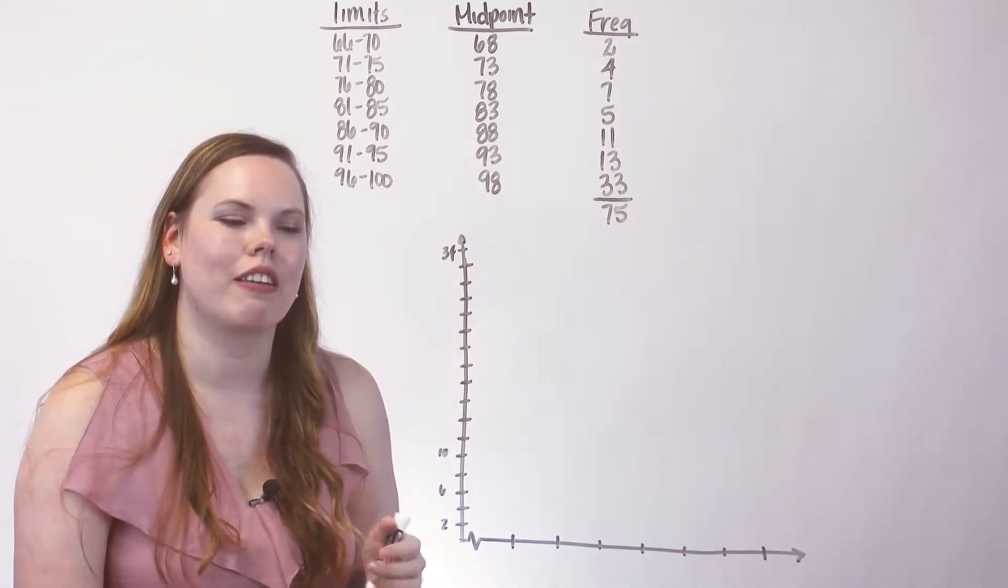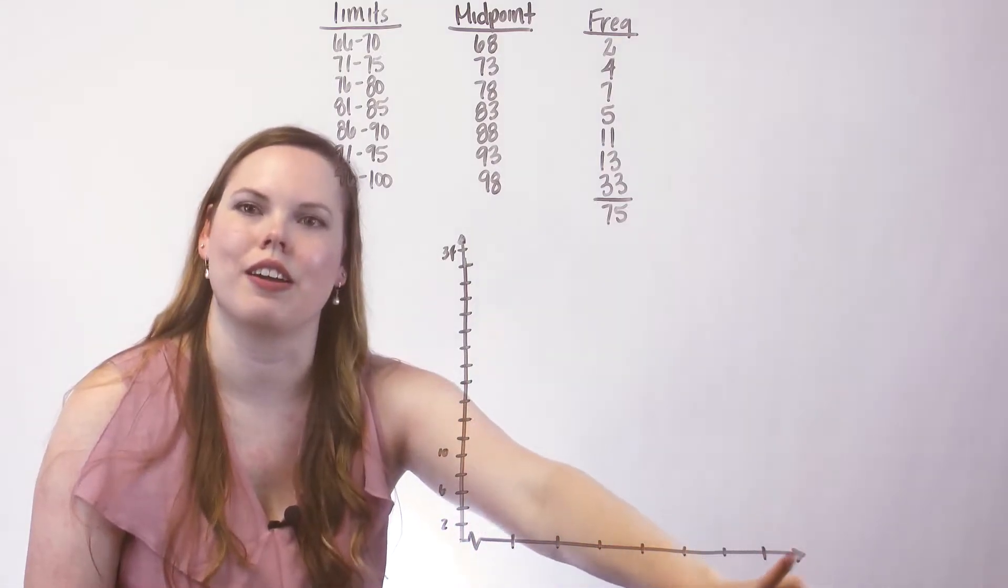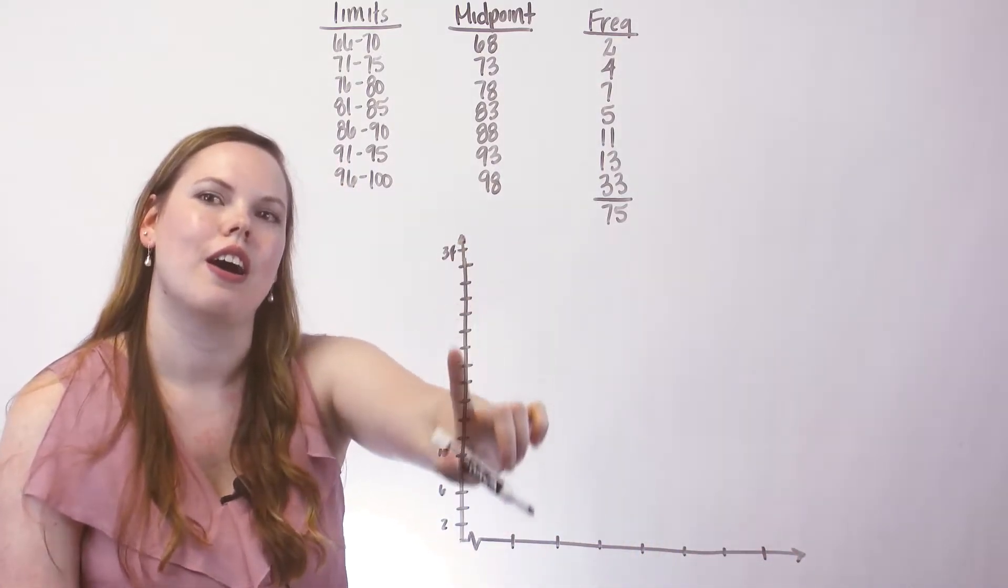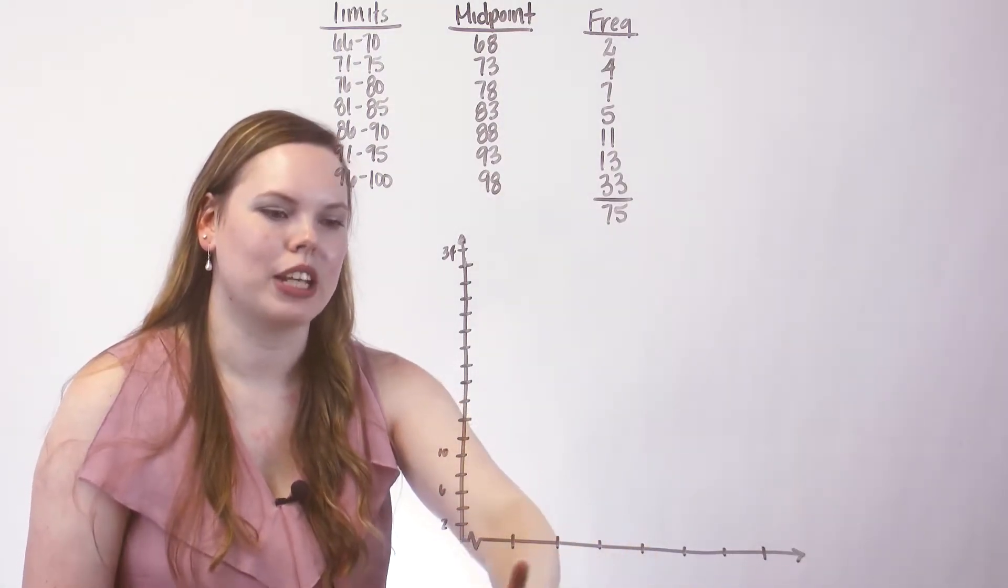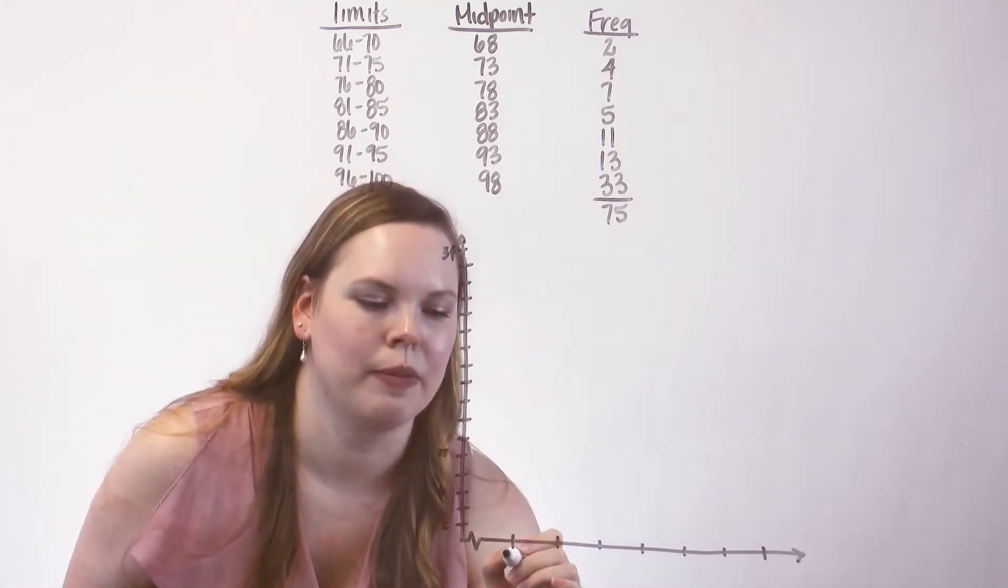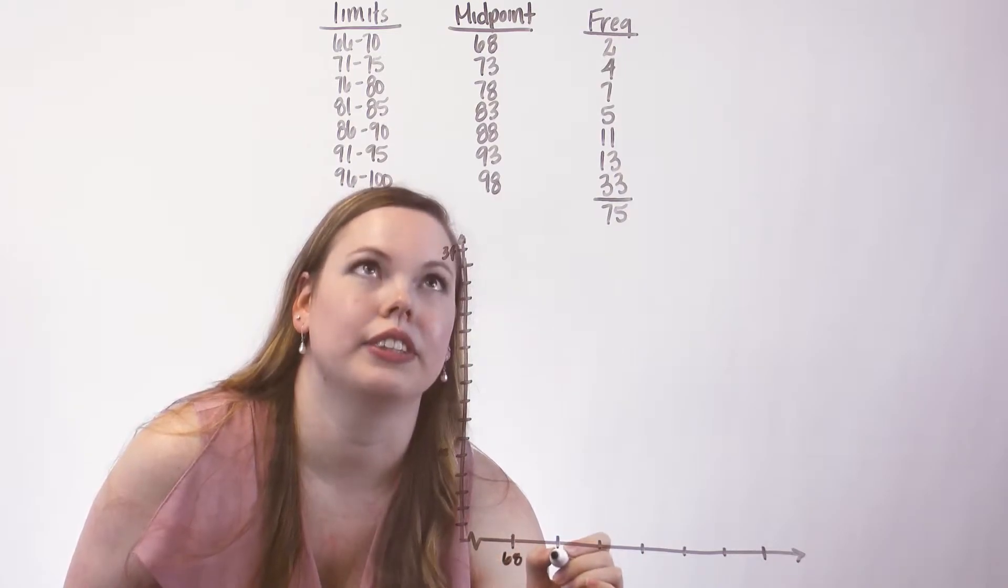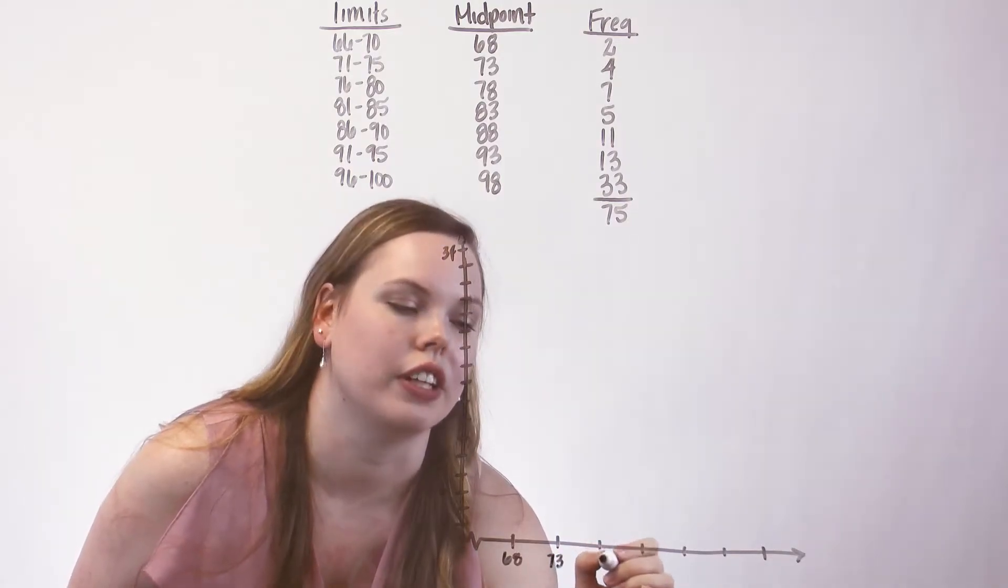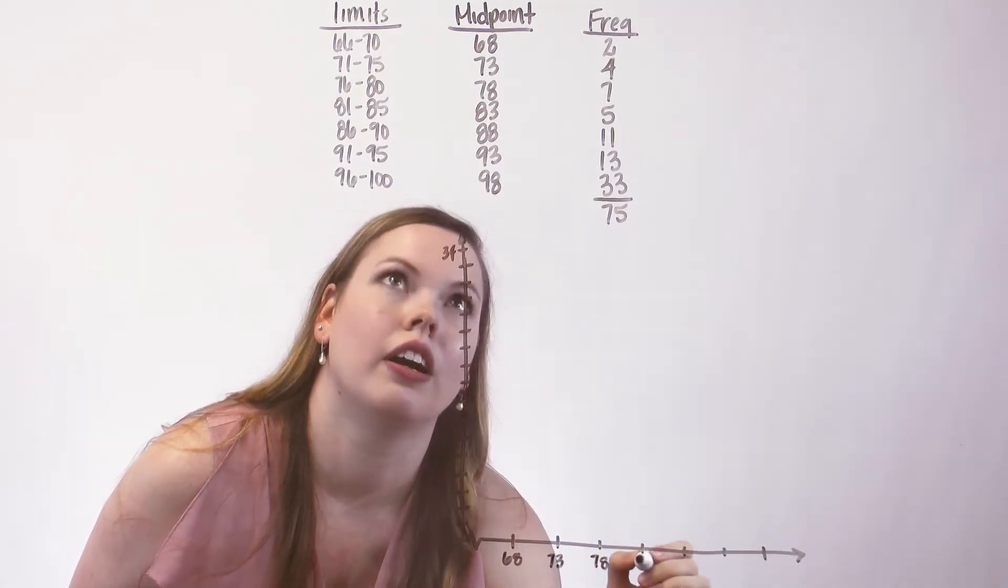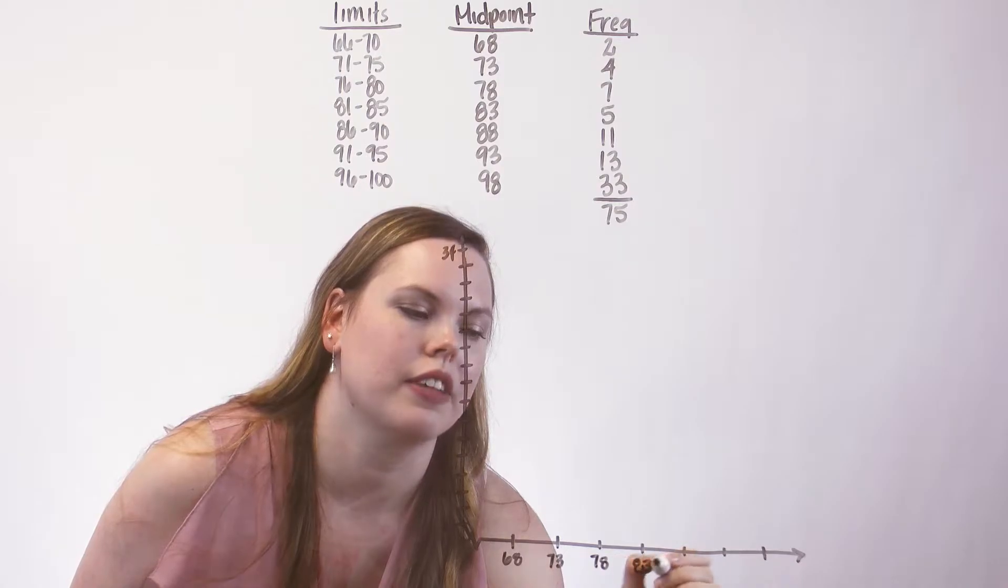A frequency polygon uses the midpoints on the horizontal axis and the frequency on the vertical axis. So I'm going to go ahead and put the midpoints in here and label them. So we found those in the frequency distribution video. The midpoints of the class.